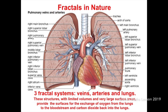These three fractal systems — the veins, arteries, and lungs — demonstrate structures with limited volumes and very large surface areas. They provide the surfaces for the exchange of oxygen from the lungs to the bloodstream and carbon dioxide back into the lungs.